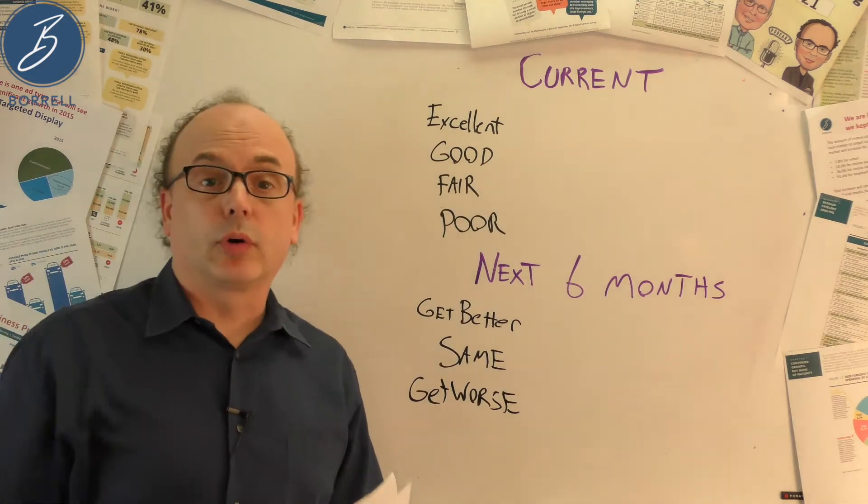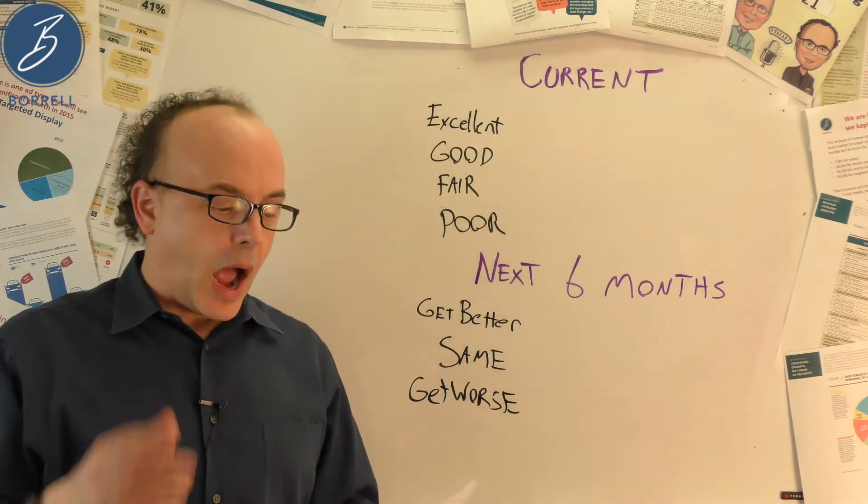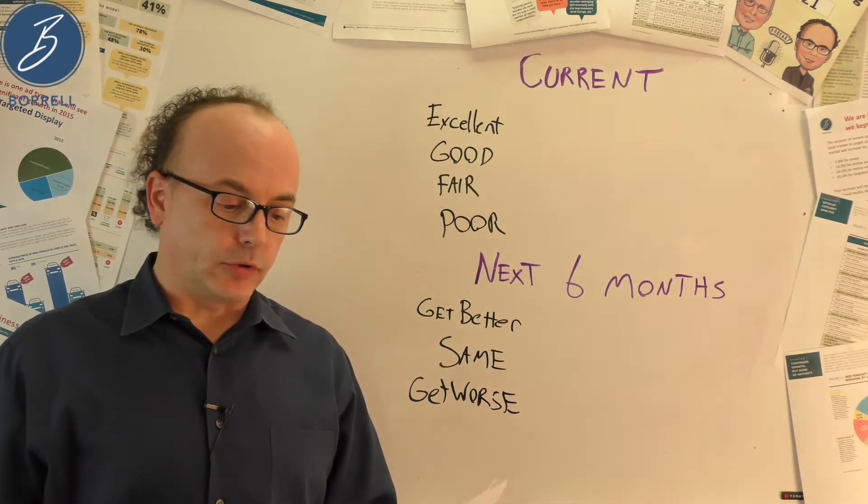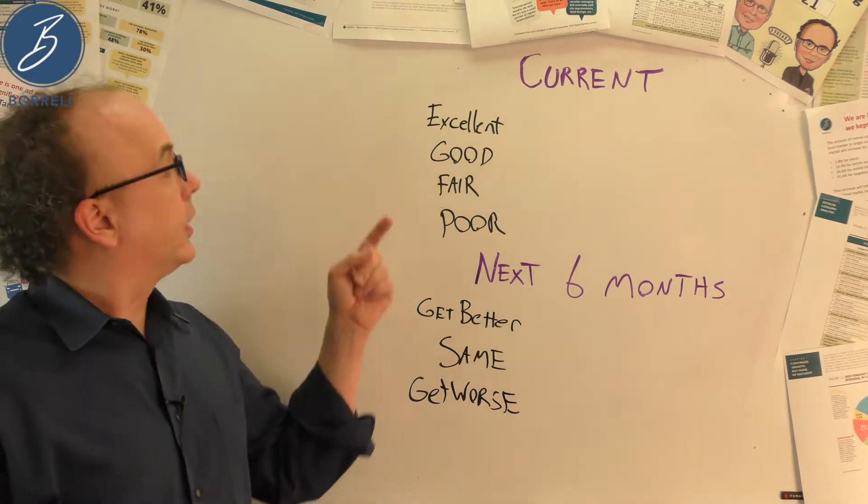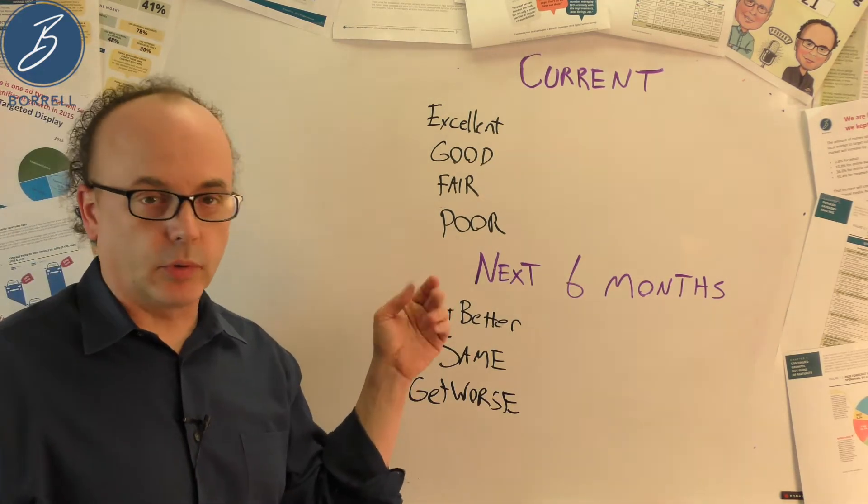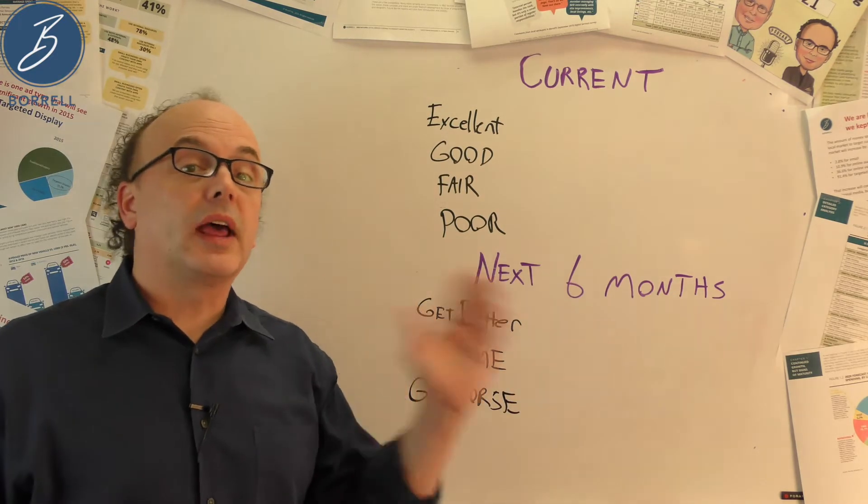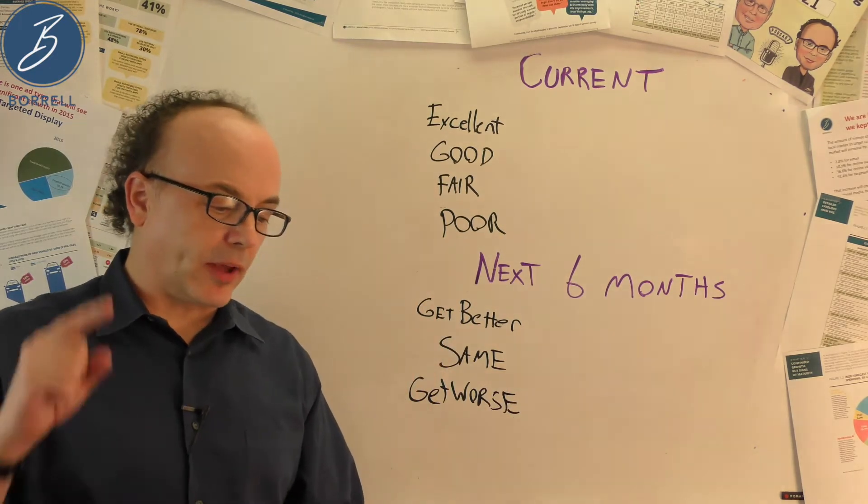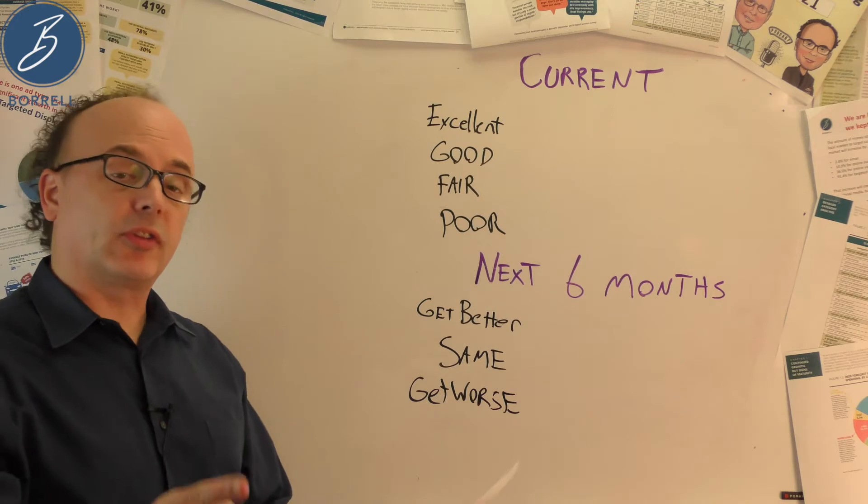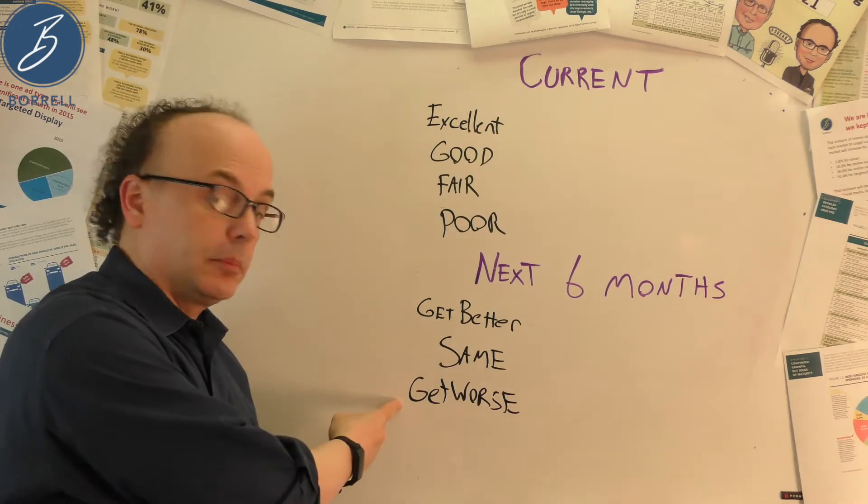Okay, first we ask them about the current economic conditions. Specifically, how would you characterize the current economic situation in the U.S. for sustaining a small business? They could choose excellent, good, fair, poor. I left out the don't knows. Who cares? Then we ask them to think about the next six months. During the next six months, economic conditions for sustaining a small business in the U.S. will get better, be the same, get worse.